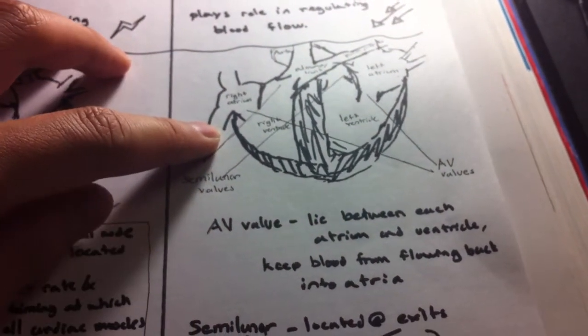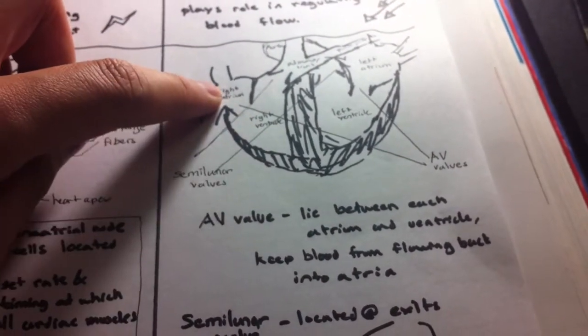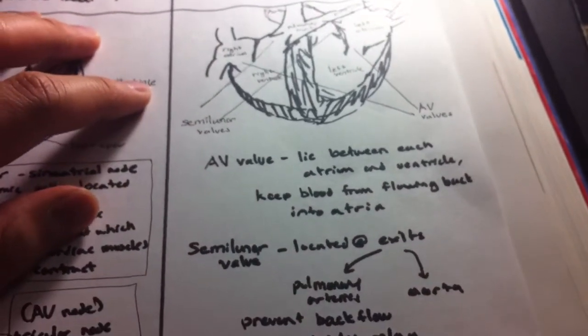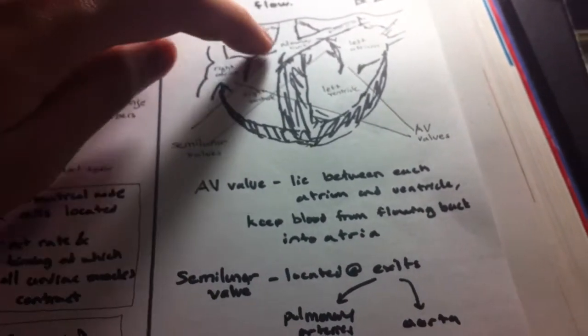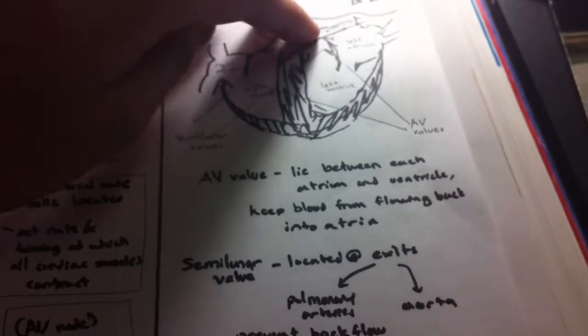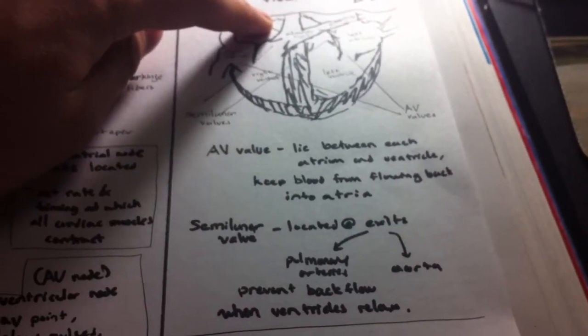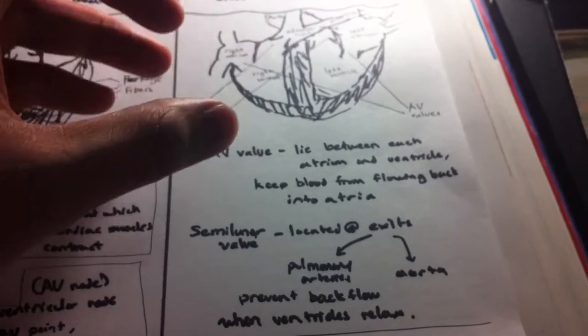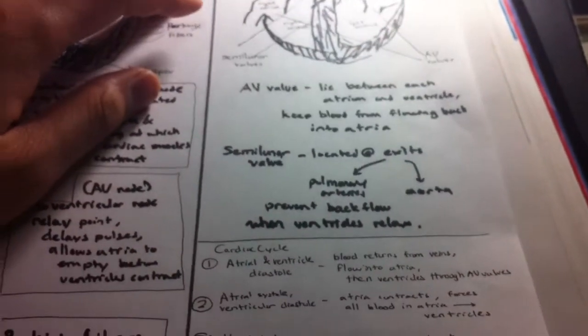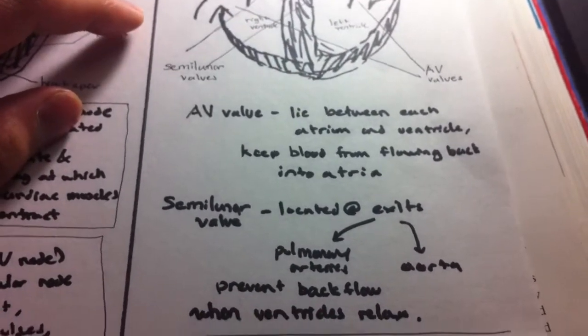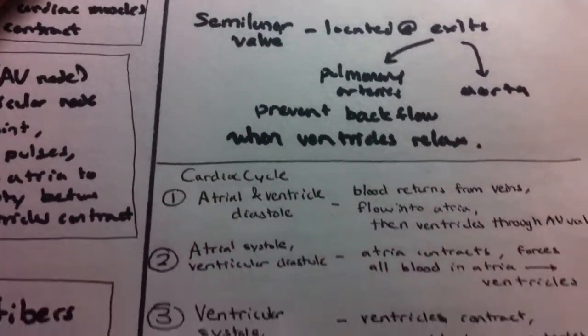The semilunar valves are located at the exits of the heart, the pulmonary arteries and the aorta, and they prevent backflow when the ventricles start to contract and send their blood out. So the AV valve plays a very important role in the cardiac cycle.